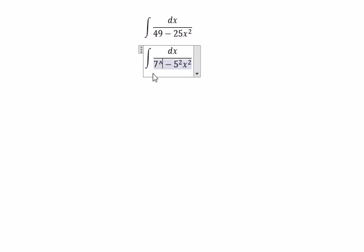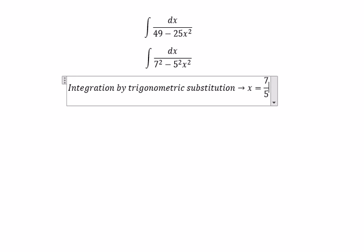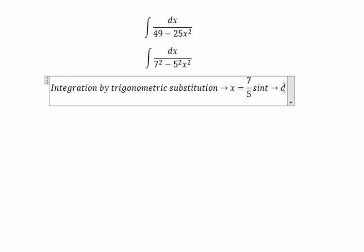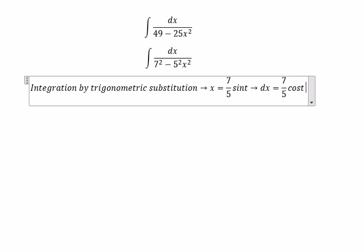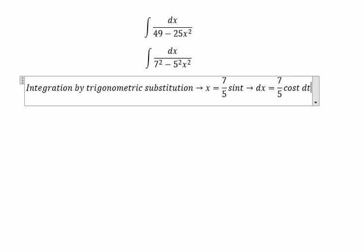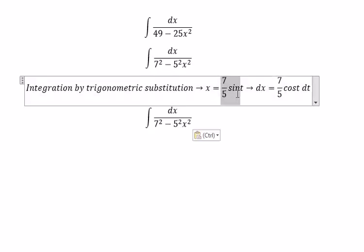We can use integration by trigonometric substitution. So we put x equal to 7/5 sin t. dx equals 7/5 cos t dt. Next we put this one in here, the x we change for this one.